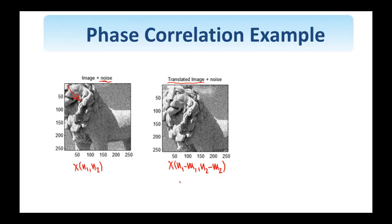Based on what we have learned about the Fourier transform, if X(ω1, ω2) is the Fourier transform of the first image, then the Fourier transform of the second one equals e^(-jω1m1) e^(-jω2m2) X(ω1, ω2). So the magnitude of the Fourier transforms of the two images is the same. However, I have this linear phase component due to the shifts in the spatial domain. My objective clearly is to estimate m1 and m2.